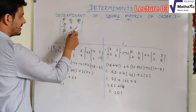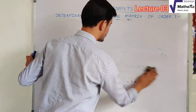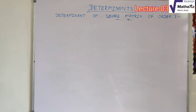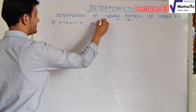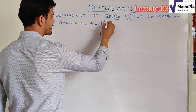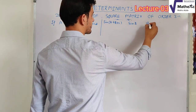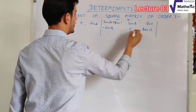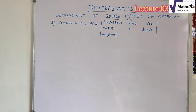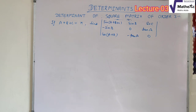Let us take another question to fully clarify the concept of expanding a 3x3 determinant. The next question is: if a + b + c = π, then find the value of the determinant whose first row is [sin(a+b+c), sin b, cos c], second row is [sin b, −sin b, 0, tan a], and third row is [cos(a+b), −tan a, 0]. Here the condition is that the sum of the three angles a, b, c is π (180 degrees).